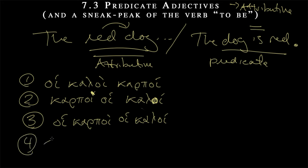And we also had our kind of fourth options where we were just really riding roughshod and saying, well, let's just not even use articles, calloi carpoi, or even carpoi calloi. And those could be attributive uses. Good fruit, good fruit. Again, not the good fruit, just good fruit, broadly speaking.